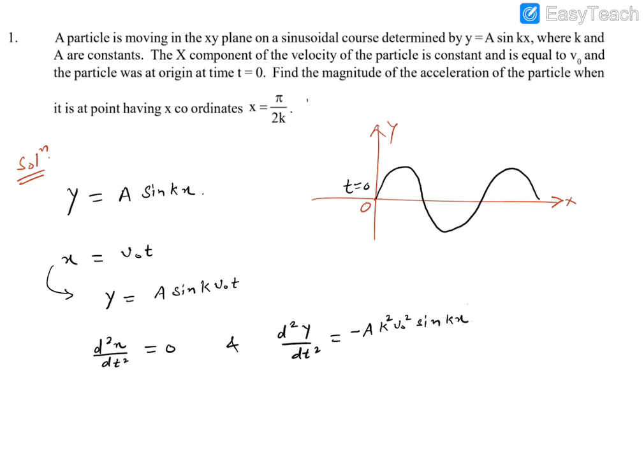Now for x equals π/2K, so that will turn out to be minus A K² V0² sin K into π/2K. So π upside, 2K downside, so K cancels. π/2 sin π/2 is 1, so this term turns out to be minus A K² V0².